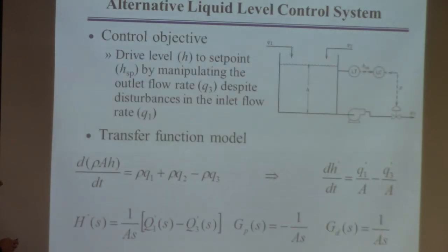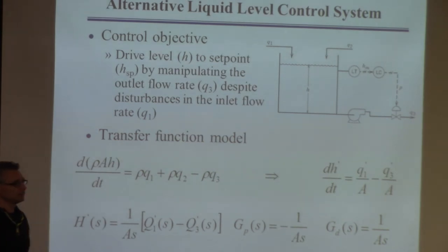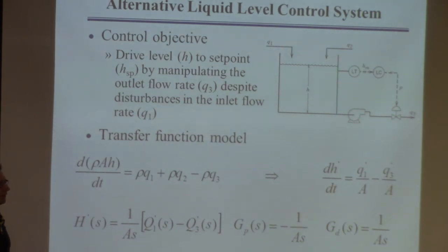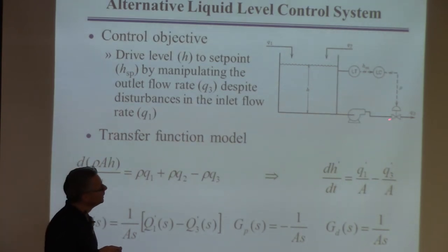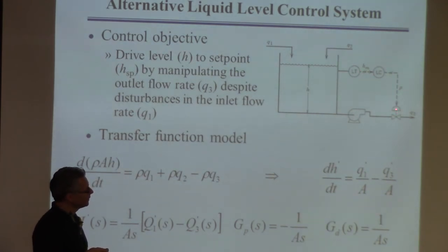Here's a variation on the same system, but now it's the more common way to do level control: two flows in, one flow out, and we control the outlet flow. If you have a pump, you can arbitrarily change the outlet flow — otherwise it would be gravity driven. We measure the level, send that signal to the controller, compare to a set point, and send a signal to the valve.